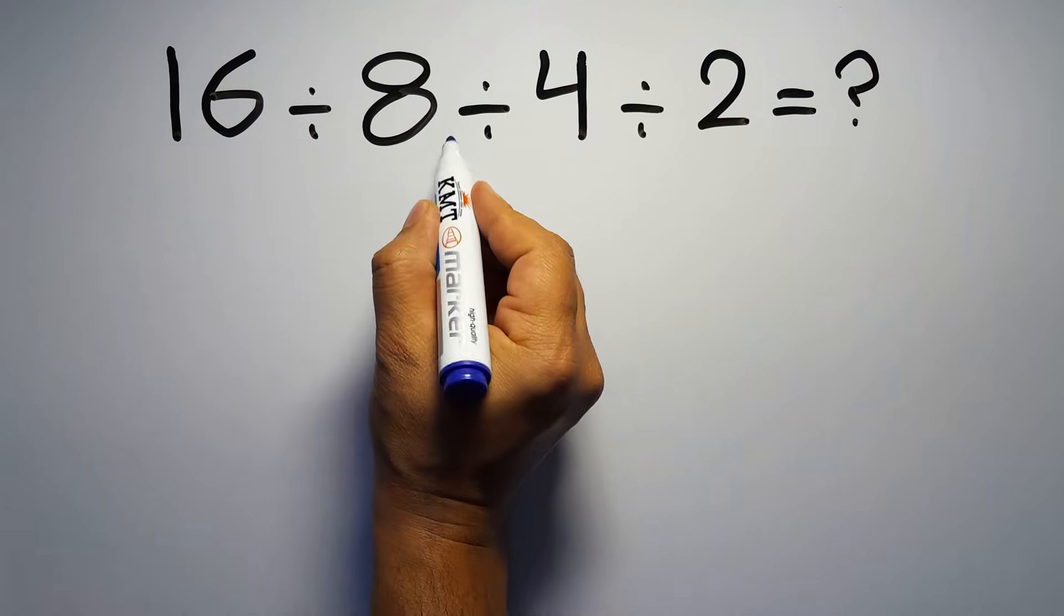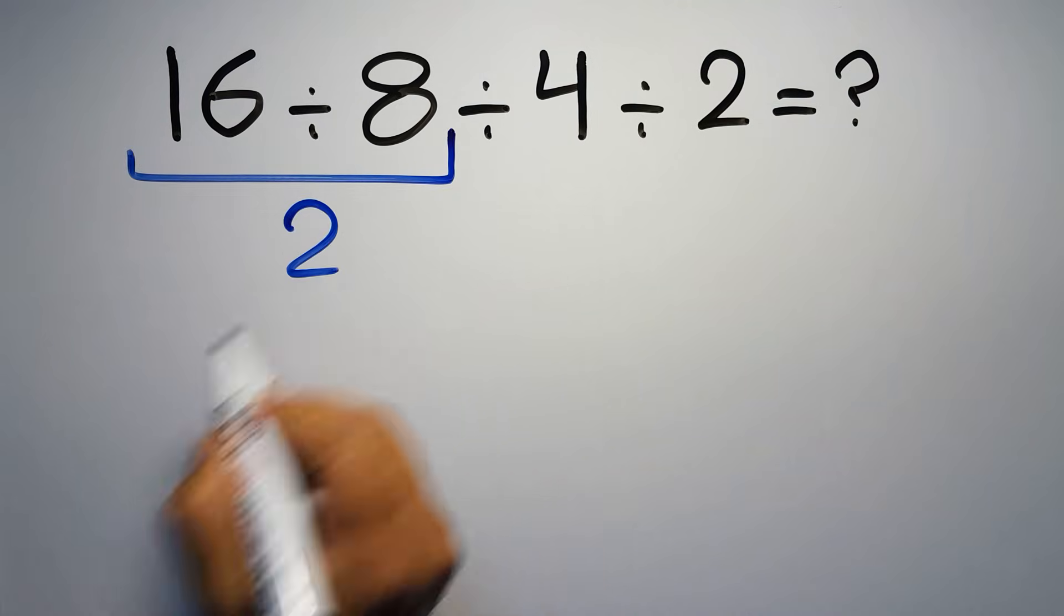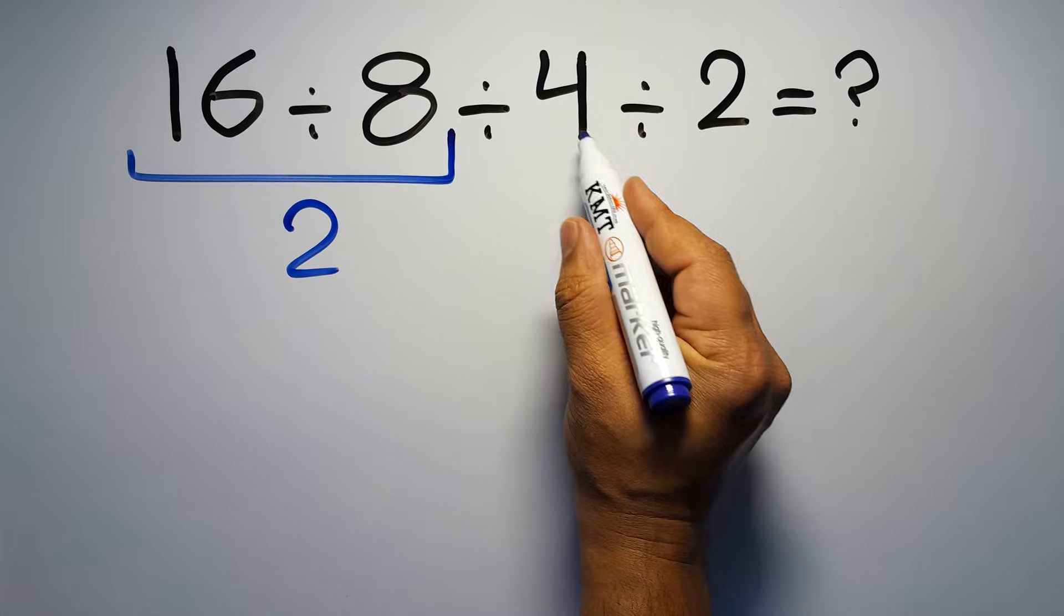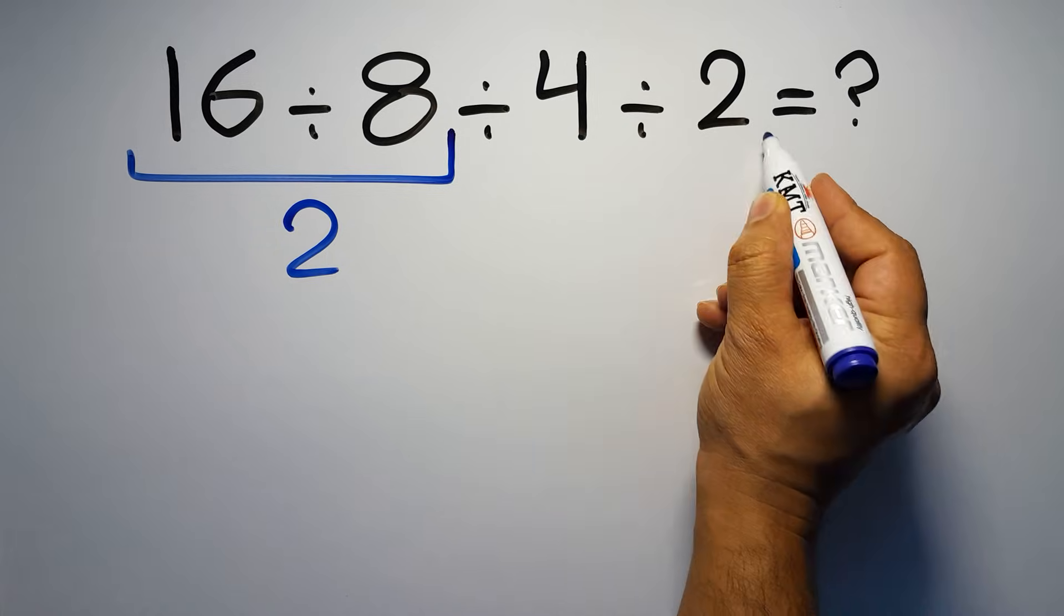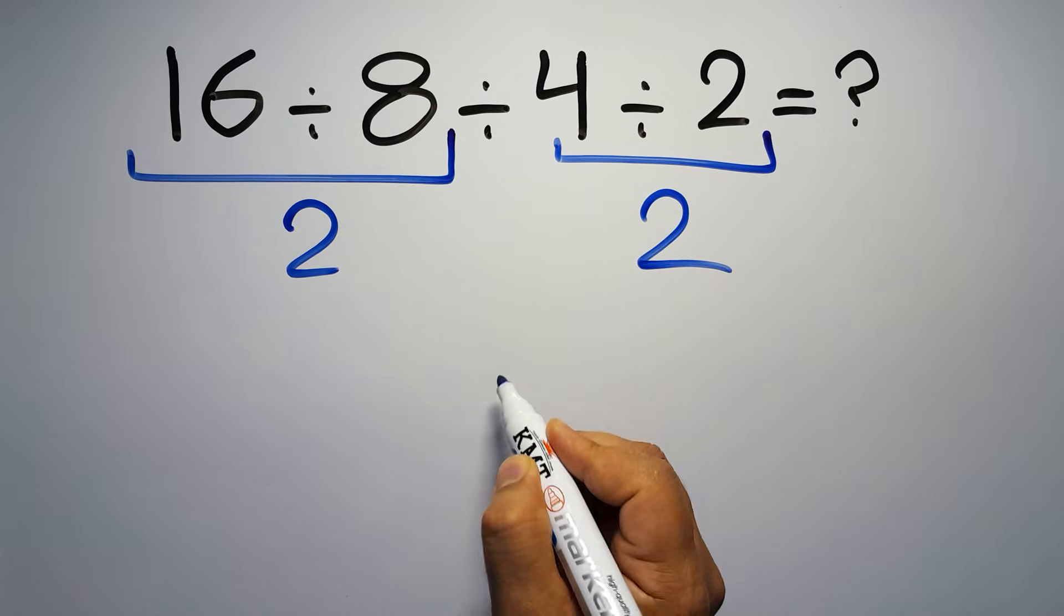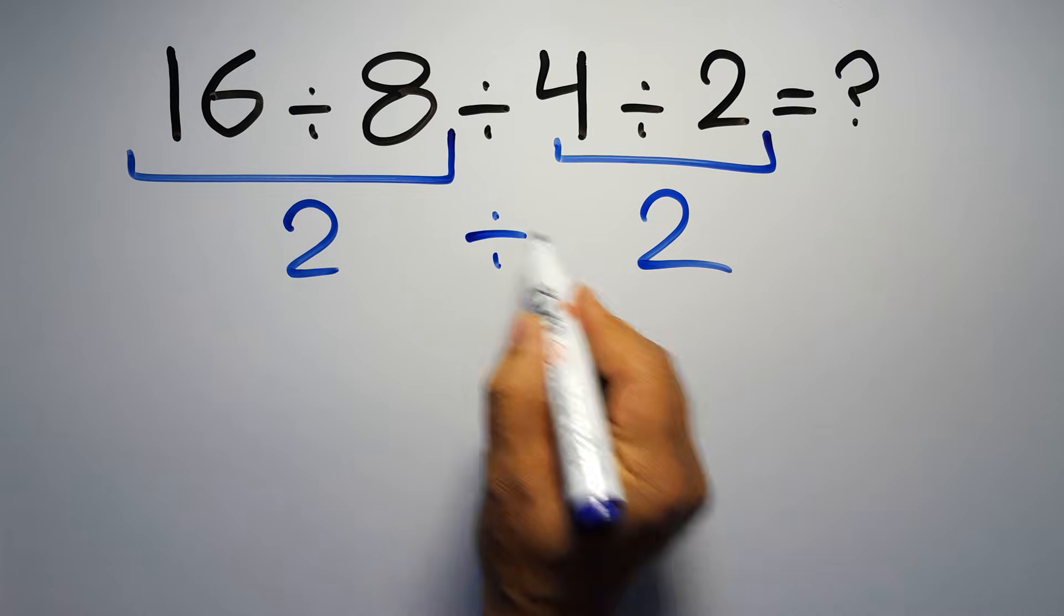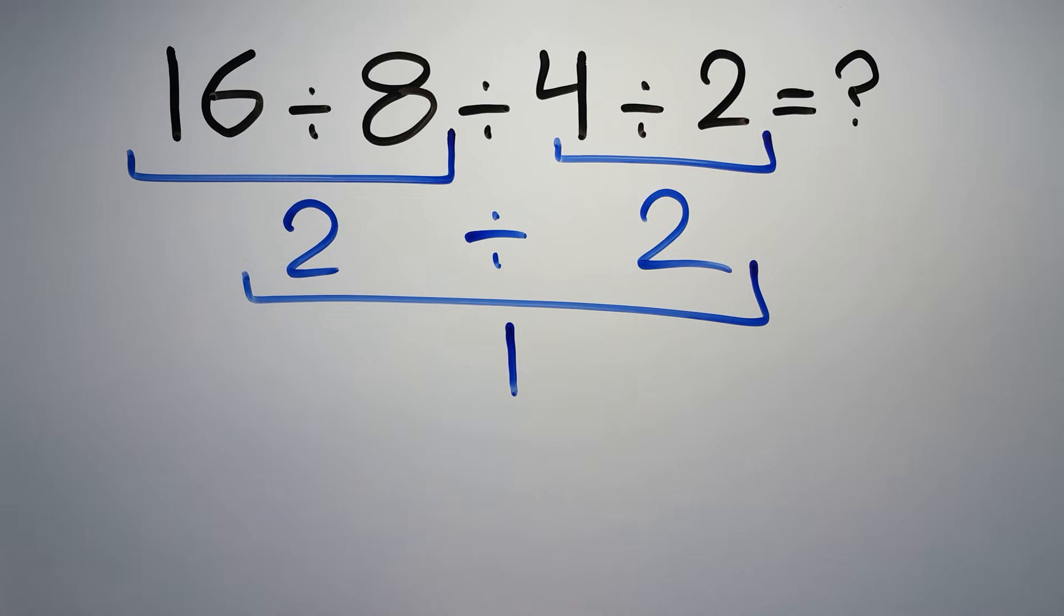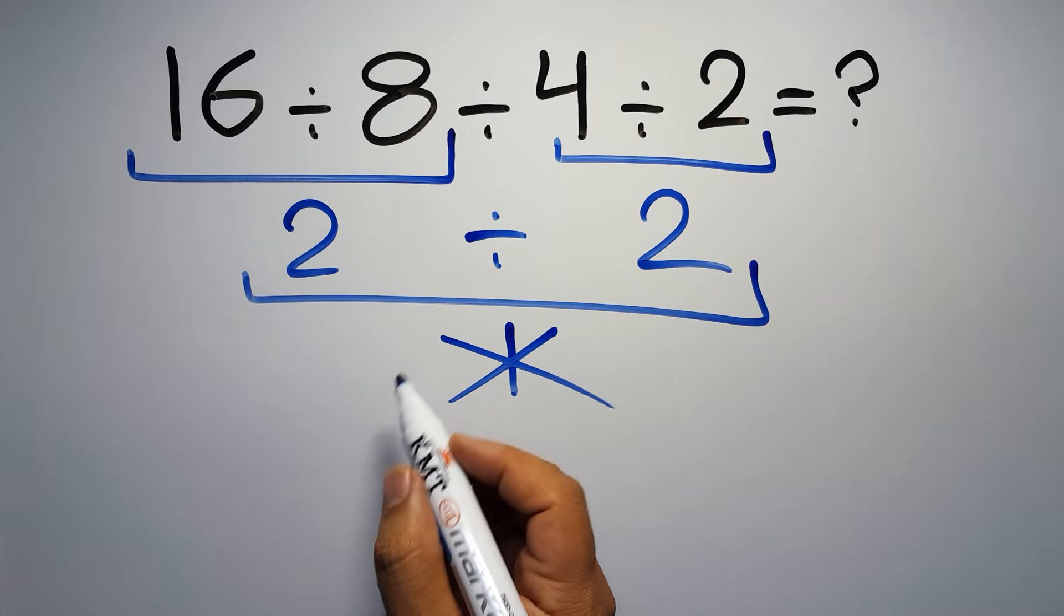16 divided by 8 gives us 2, and 4 divided by 2 is 2, so 2 divided by 2 equals 1. But this answer is not correct because according to the order of operations, when we